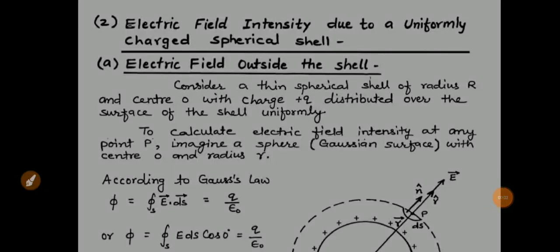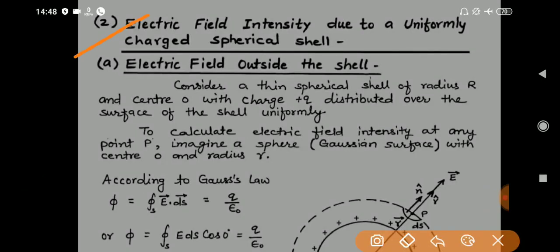Good afternoon students, this is part 7 of this video lecture series. Class 12th Chapter 1: Electric Charge and Field. In the previous video we learned electric field due to a uniformly charged infinitely long wire with the help of Gauss's law. Today's topic is electric field intensity due to a uniformly charged spherical shell — that is, a hollow sphere. We need to find the electric field, and there will be 3 cases for a spherical shell.